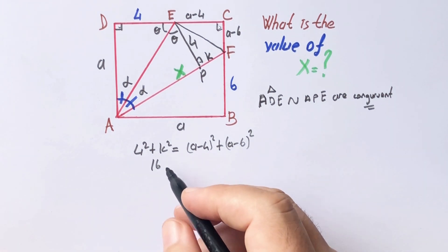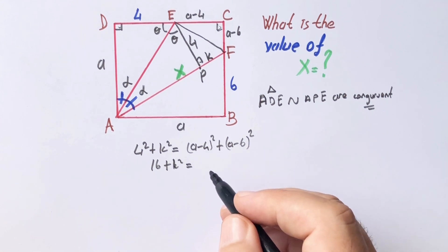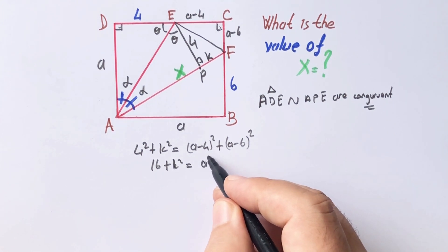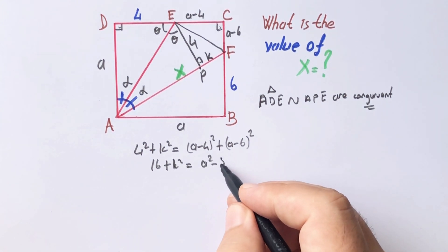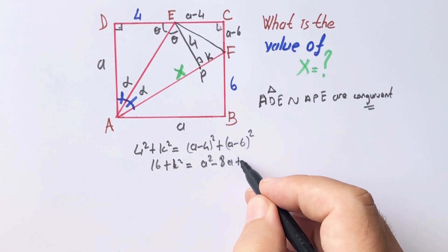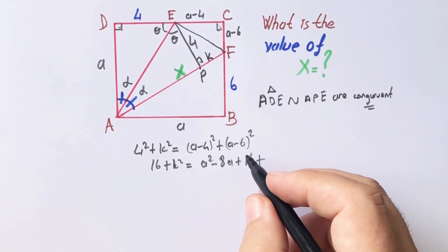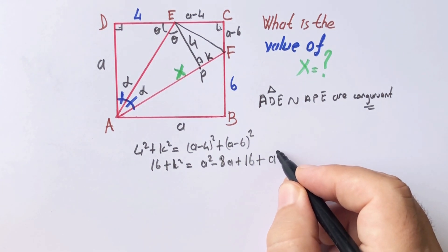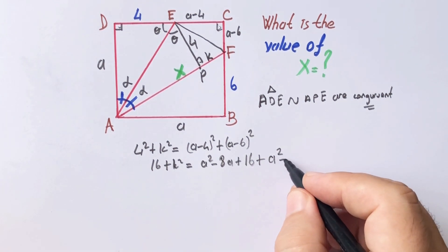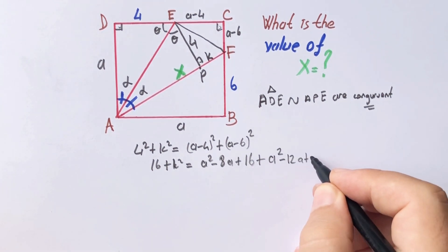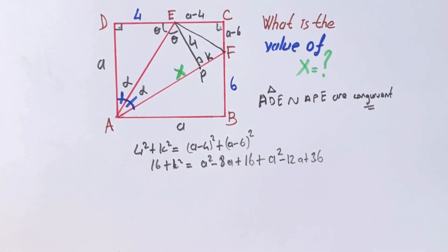16 plus k squared equals a squared minus 8a plus 16 plus a squared minus 12a plus 36.